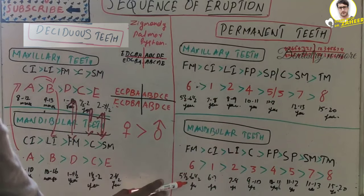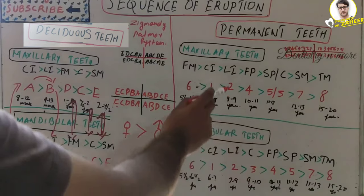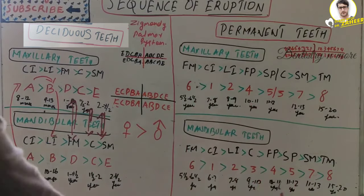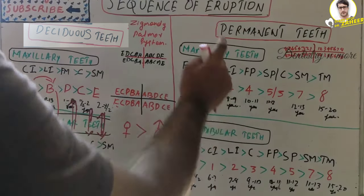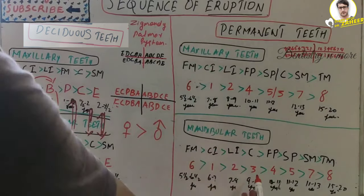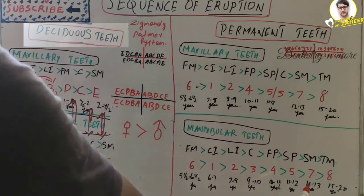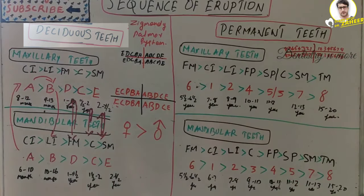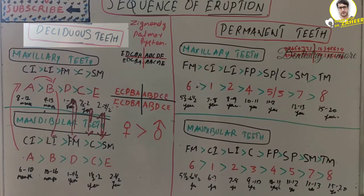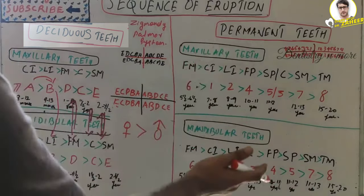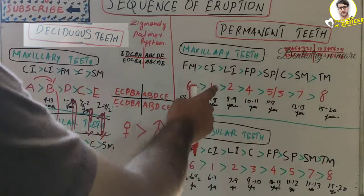For mandibular permanent teeth, the sequence is: first molar at 5½ to 6½ years, central incisor at 6 to 7 years, lateral incisor at 7 to 8 years, then the canine — not the first premolar as in the maxilla — then first premolar at 10 to 11 years, second premolar at 11 to 12 years, second molar at 11 to 13 years, and third molar at 15 to 20 years.